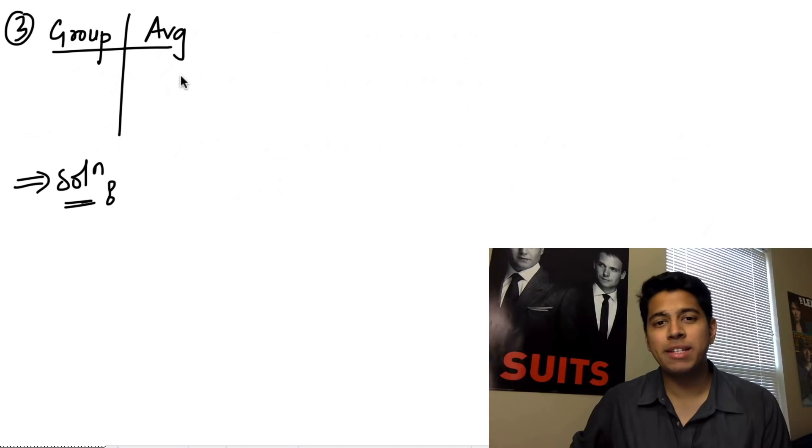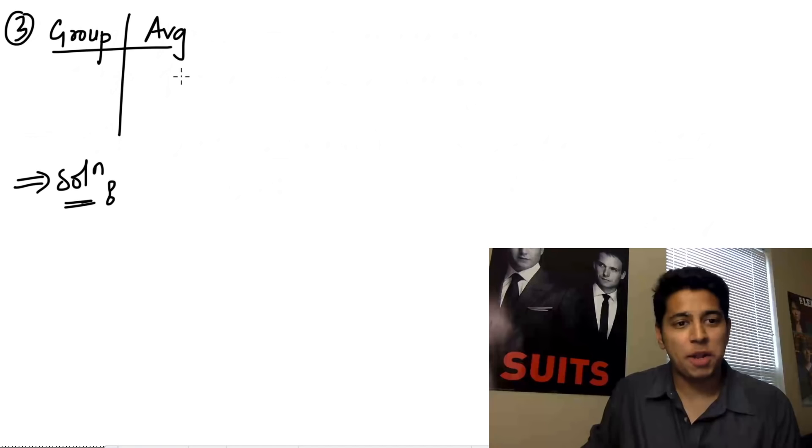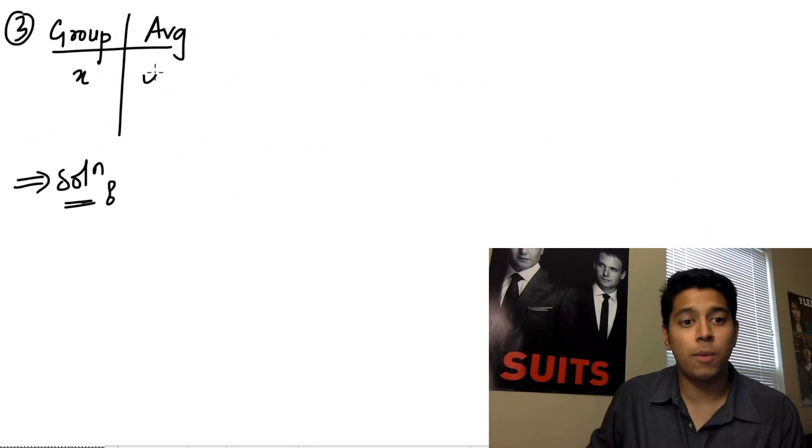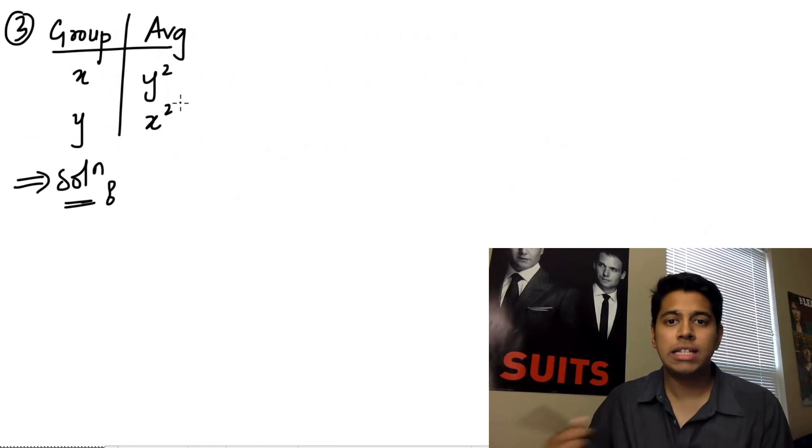Let's go on to problem number 3. Now the third problem is a slight extension of the second problem. Let's solve it and I'll tell you why. So now they've given us that the average of x numbers is y square and the average of y numbers is x square. What's the average? Now, similar to the second sum, you just need to solve it out in a similar way.